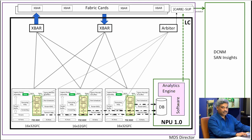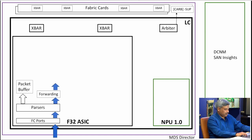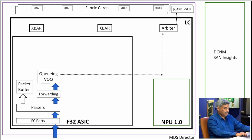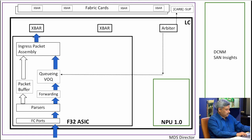Inside the ASIC, the packet comes in through the FC ports, is parsed, and we determine what kind of packet it is. We form a key for lookup and send it to the forwarding engine, where we decide whether the packet needs to be sent to the analytics port. This is fully configurable — you have all the options you'd normally have in a forwarding or ACL list — giving you full flexibility on what you want to see in the analytics port. After that, the packet continues its flow through the VOQ ingress, packet assembly, and crossbar.